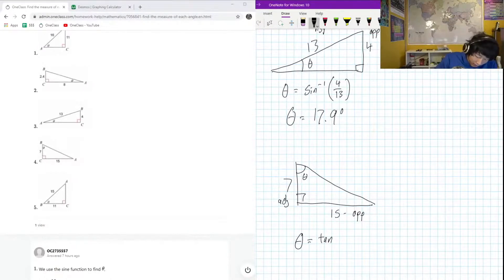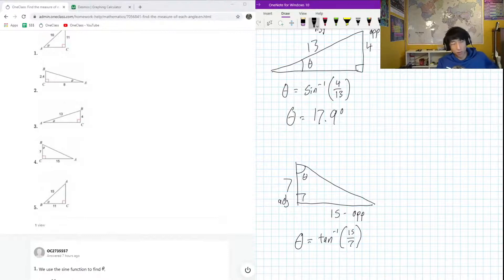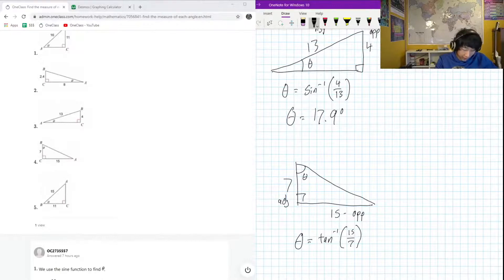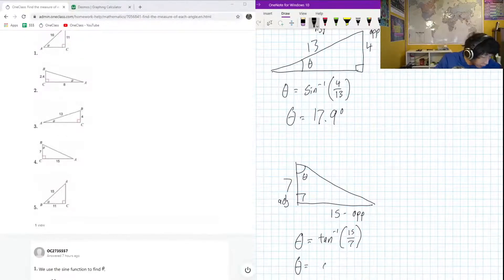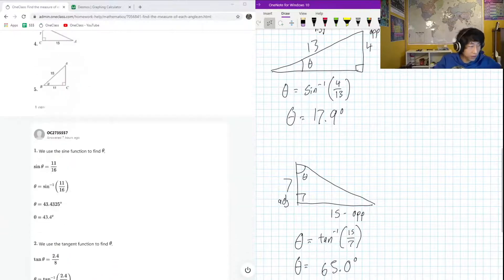Inverse tan of opposite over adjacent, 15 over 7. I expect something that's going to be bigger than 45 but less than 90. Let's figure that out: inverse tan 15 divided by 7, and I got 64 degrees - or 65.0 degrees. It was 64.98 but rounded it up to 65 degrees. Hopefully we came to the same conclusion down here - yep, awesome.